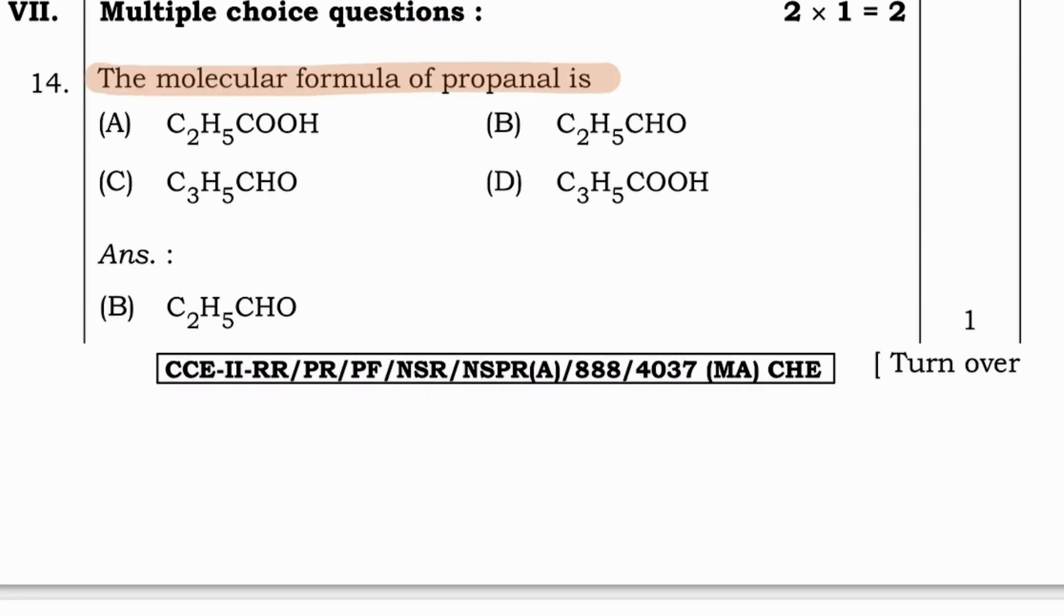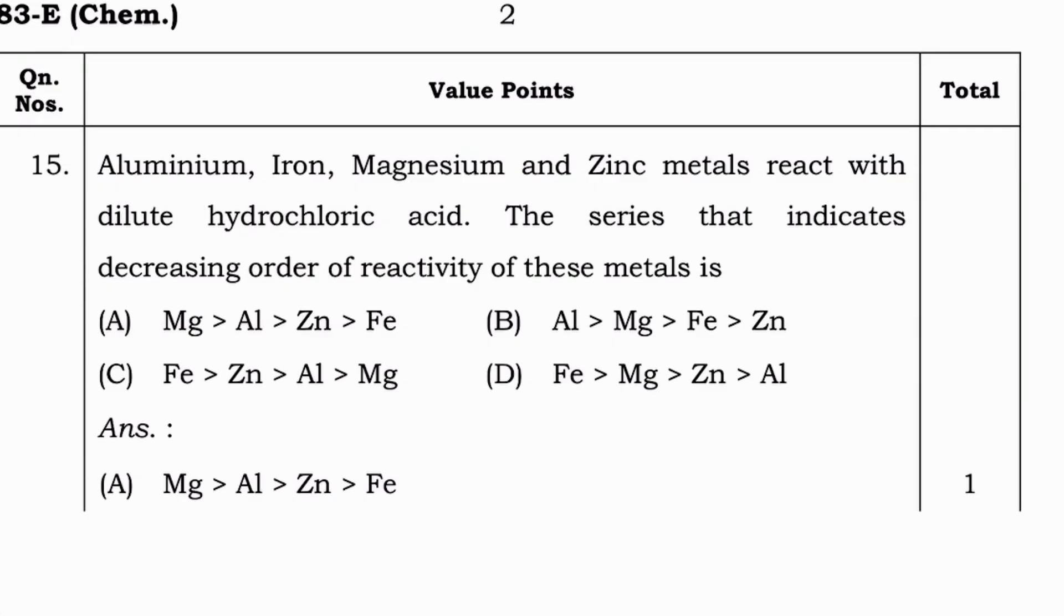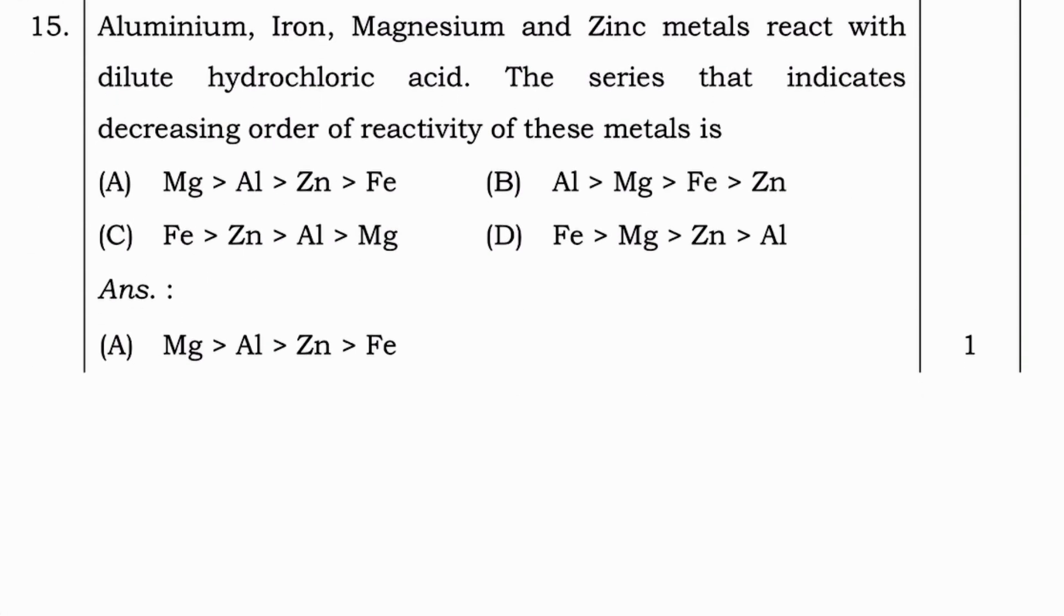Next question. The molecular formula of propanol is C2H5COOH, C2H5CHO, C3H5CHO, or C3H5CHO. Answer is option B C2H5CHO, you can also write it as C3H6O.